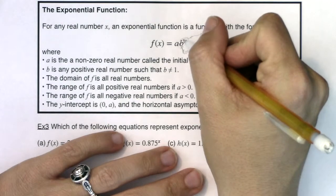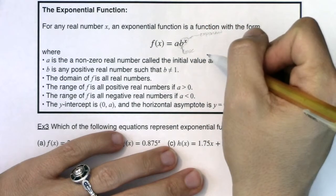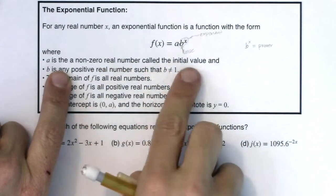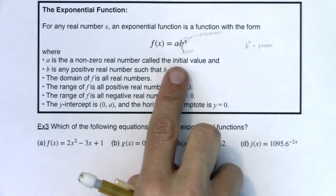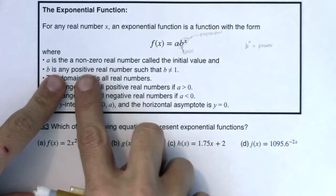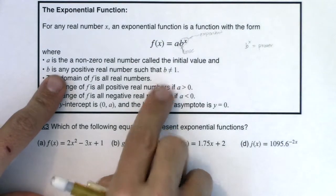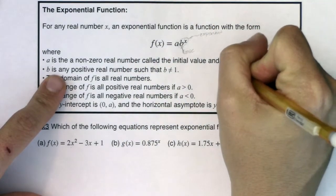Anytime your variable is in the exponent of a power, it's an exponential function. So a is some non-zero real number. You might hear me call or refer to it as the initial value, and I'll talk a little bit more about why I say initial value in a moment.